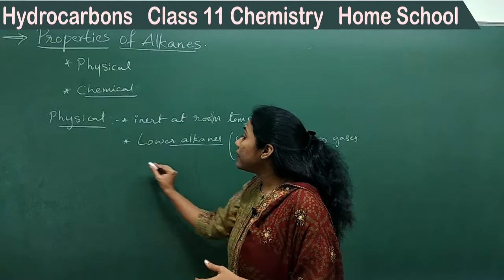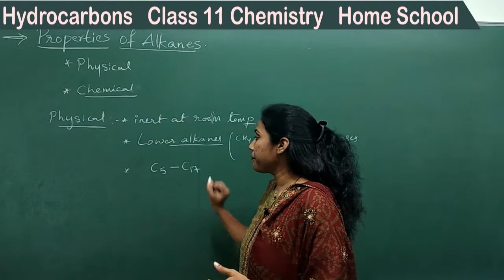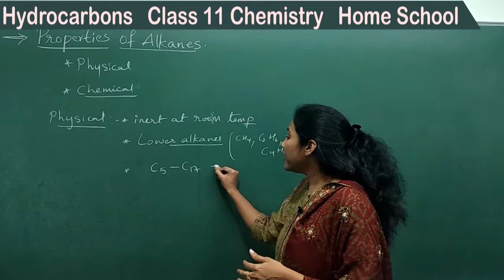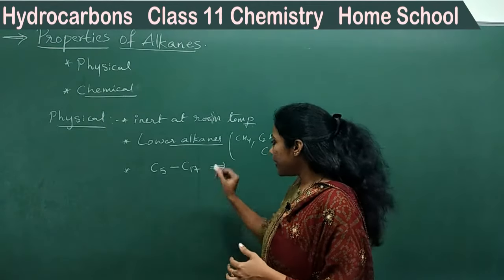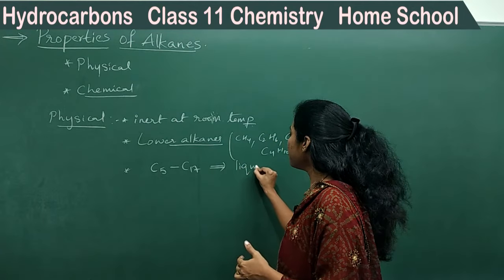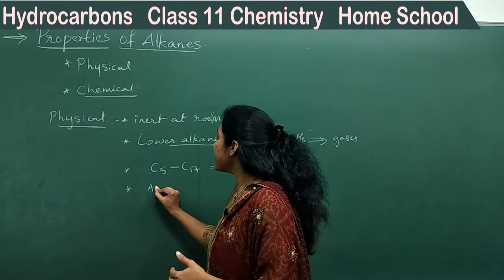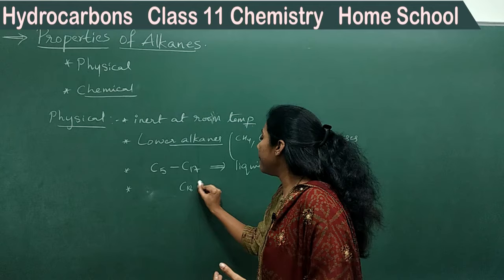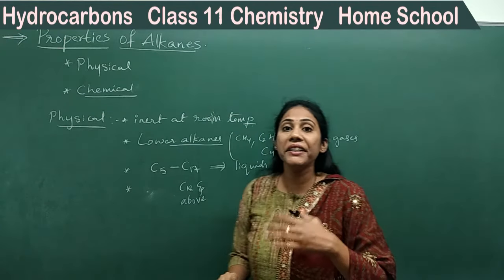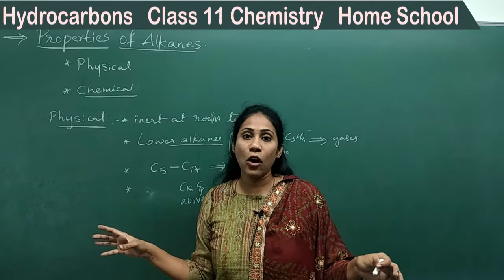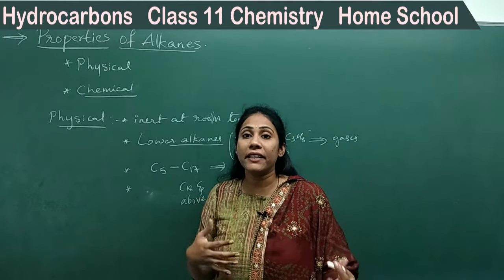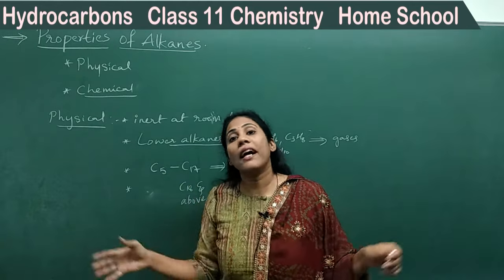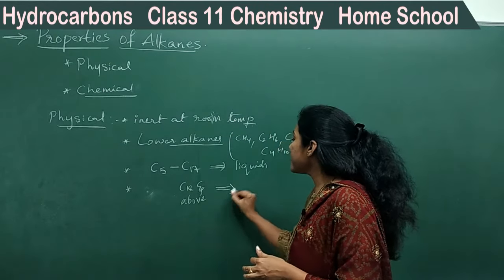The middle members — that is, alkanes from C5 to C17, meaning alkanes having 5 to 17 carbon atoms — always exist as liquids. Finally, C18 and above are called higher alkanes, where the carbon chain is really very long. You can have 20, 25, 30 carbons and above. When alkanes have a very big carbon chain, they are called higher alkanes and they always exist as solids.